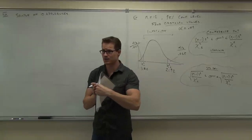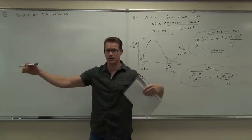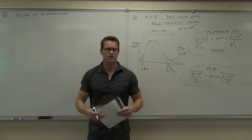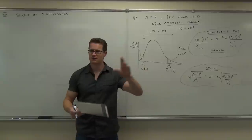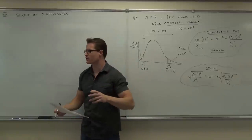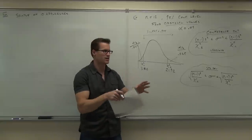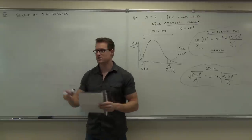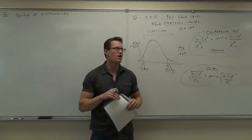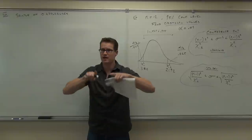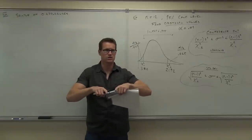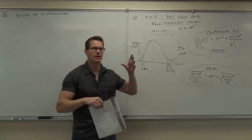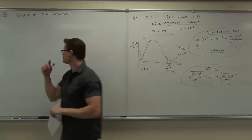Even if the average comes out the same, you could still have a different spread of data. Remember the bank lines example from Chapter 3? Two datasets could have the same mean but completely different spreads. Means aren't the only things that are important — the spread of your data is also pretty important. We want a confidence interval to say the actual spread of our voltage is within an acceptable range.